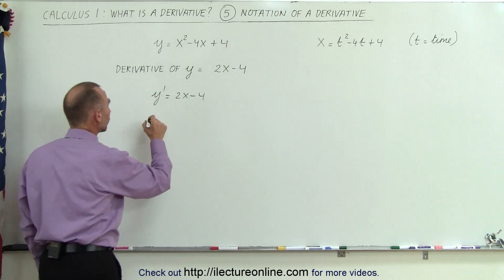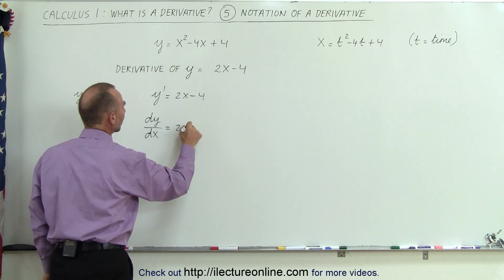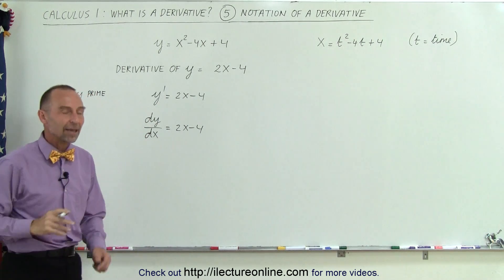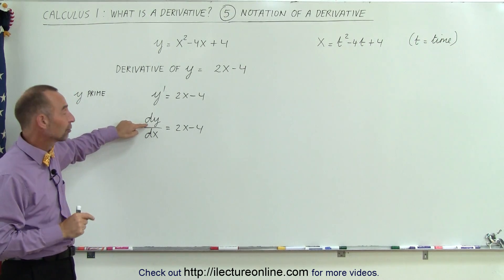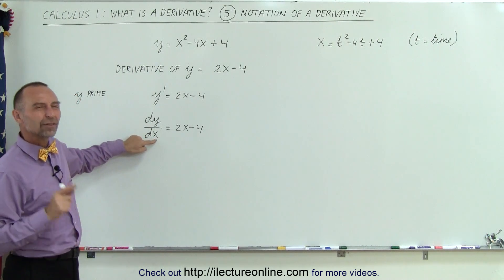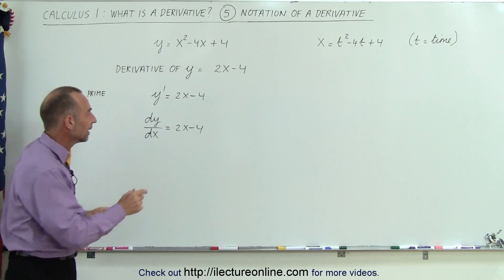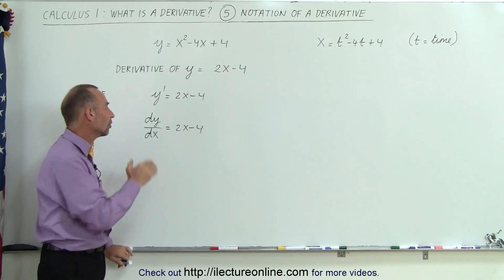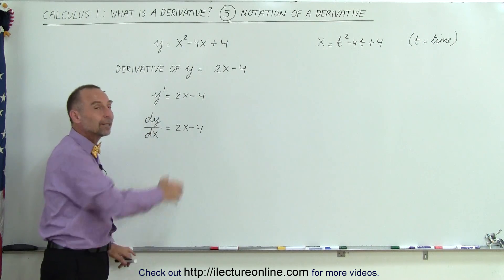Another way to write it is: dy divided by dx is equal to 2x minus 4. So y prime and dy/dx mean exactly the same thing. Here we write it out specifically — the d stands for 'derivative,' so we say the derivative of y with respect to x. That's how we read it: the independent variable is x and the dependent variable is y.